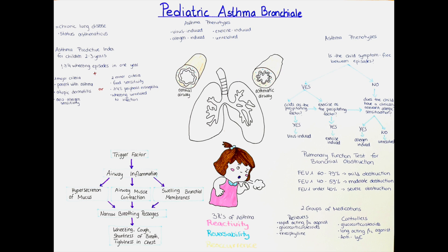Even though the definition of asthma is quite clear, it is still difficult to diagnose children of preschool age and infants. This is because up to half of all infants and children younger than three years will experience at least once an episode of bronchoconstriction and wheezing. But 60% of children who had one of those episodes will be considered free of asthma at school age. Even though the definitive diagnosis is difficult, it is possible to identify high-risk children among the population of two and three-year-olds.